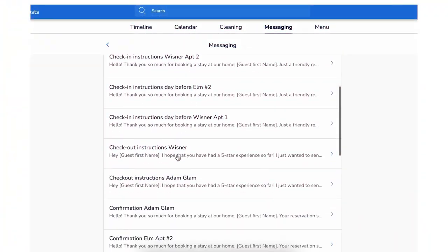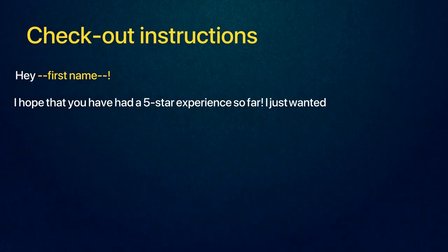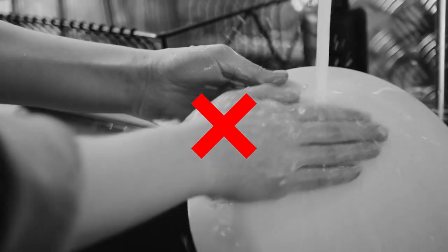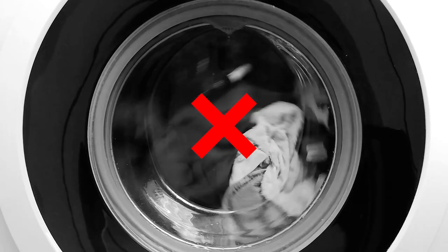The fourth message is the checkout instructions, and it's pretty simple. I do not have my guests do a lot of cleanup before they check out — I think that's unnecessary. They pay for an experience; I pay my cleaner to clean. So I just say: if there's any trash around the home, place it in the inside trash bins, pack up all your belongings, and lock the door on the way out. I do not have them wash dishes, strip the beds, or wash linens, because I don't think it's fair — and it is against Airbnb's policy to impose onerous checkout instructions and cleanup tasks.